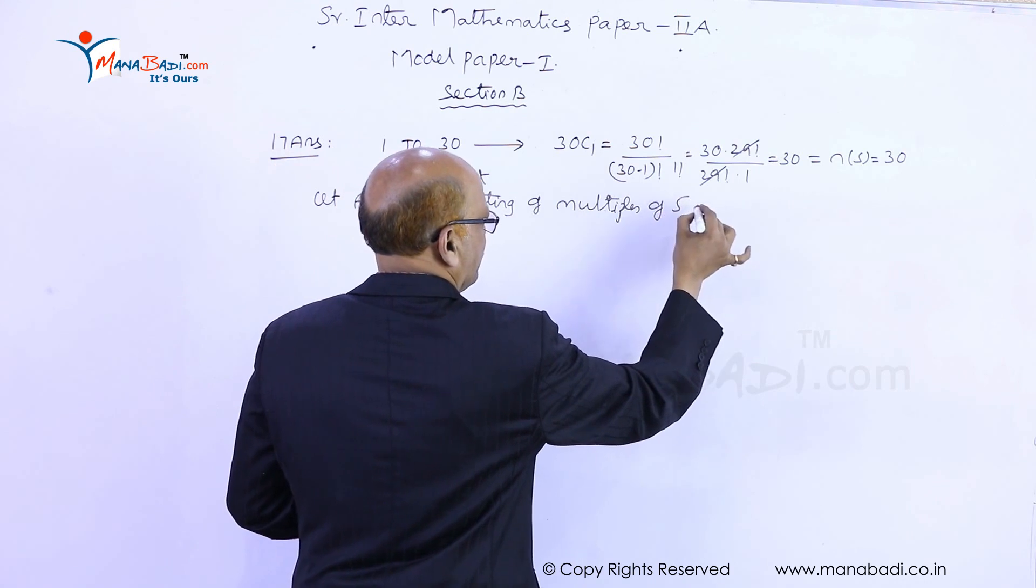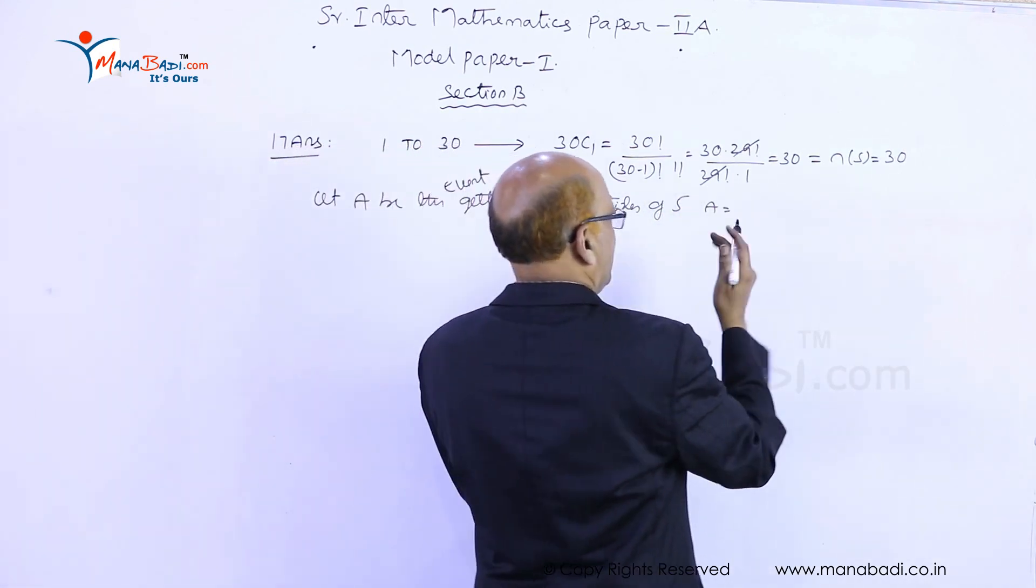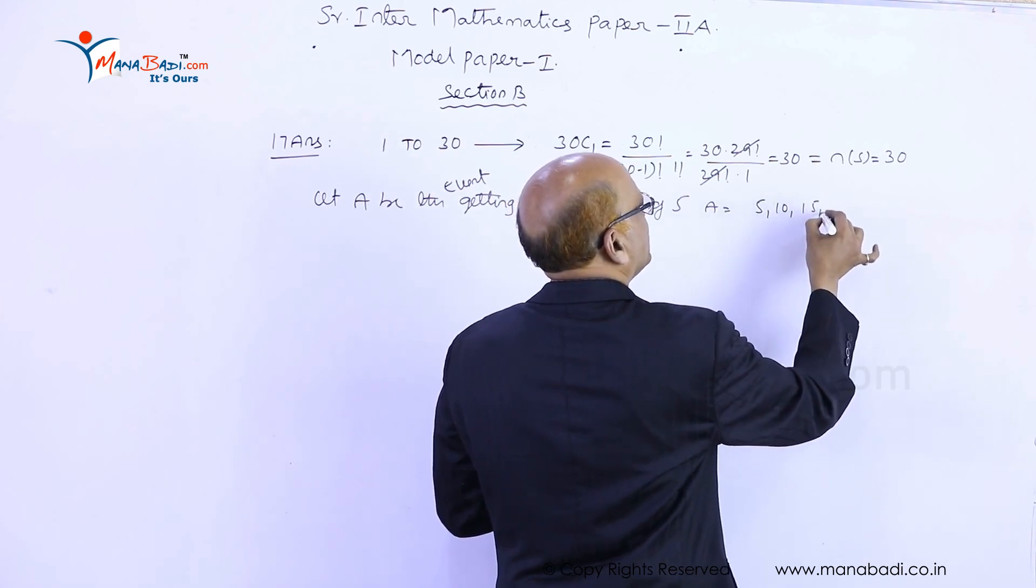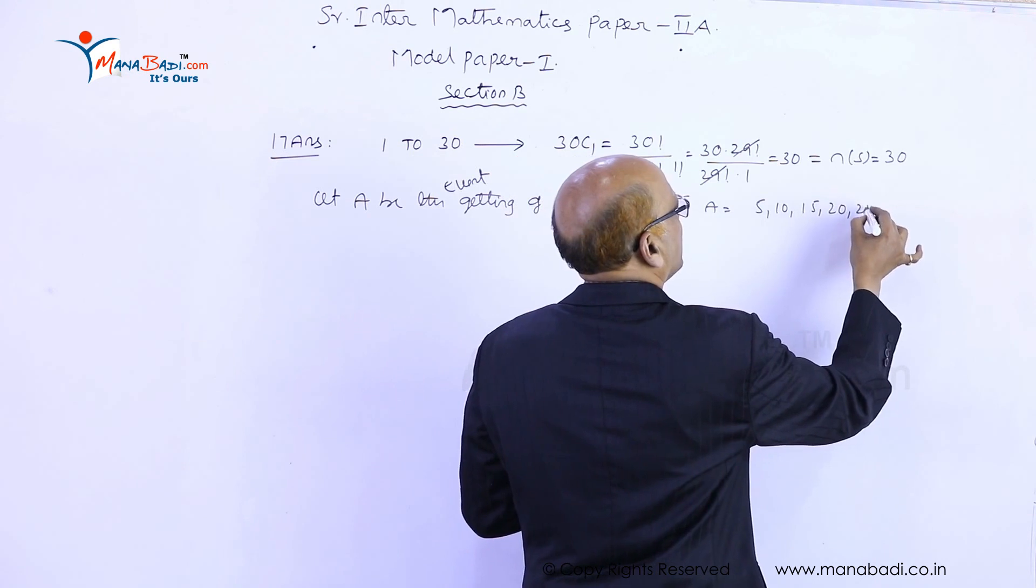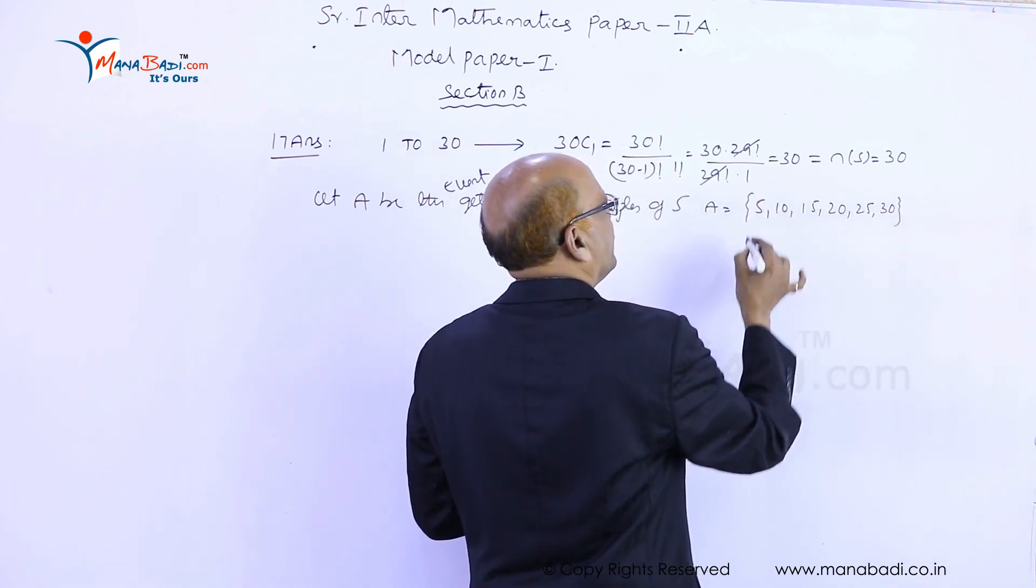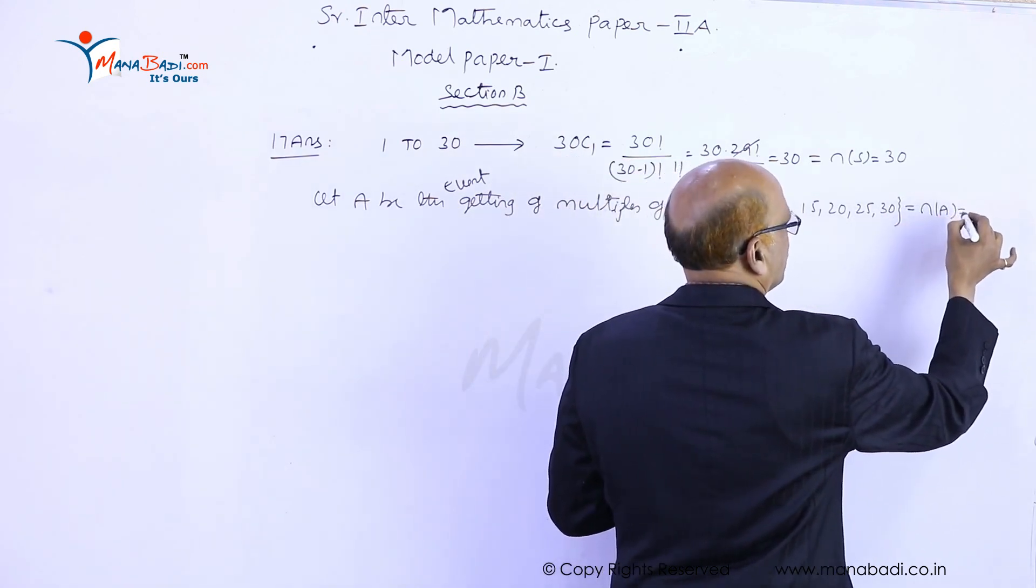Multiples of 5 out of 30 are 5, 10, 15, 20, 25, 30. There are six multiples of 5 from 1 to 30, so total n(A) equals 6.